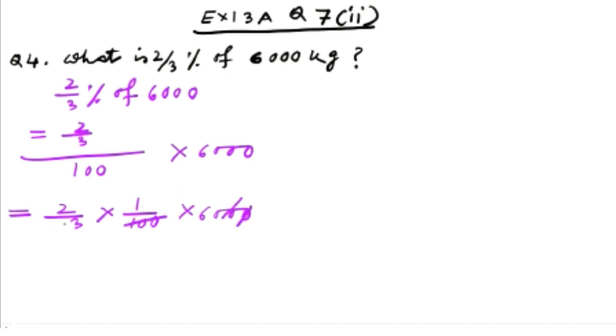I am simplifying it. So zeros cut. This is 30. 3 twenties are 60. Now this is equal to 40.